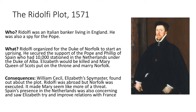Now we're going to look at the plots against Elizabeth in chronological order, starting with the Ridolfi Plot of 1571. By the end we'll have a profile for four rebellions and plots - the Northern Revolt, the Ridolfi Plot, the Throckmorton Plot, and the Babington Plot - and we're going to rank them in order of which was the greatest threat, and look at similarities and differences between them.